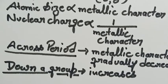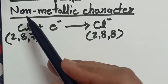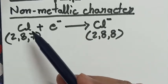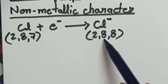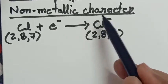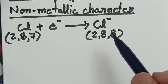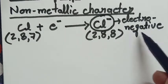The next topic is non-metallic character. Non-metals have a tendency to gain electrons in order to attain octet in their outermost shell. These elements gain electrons to form anions, and hence are called electronegative elements.